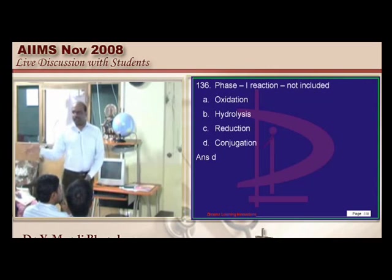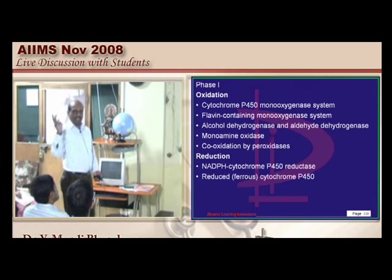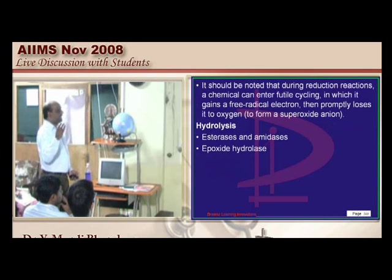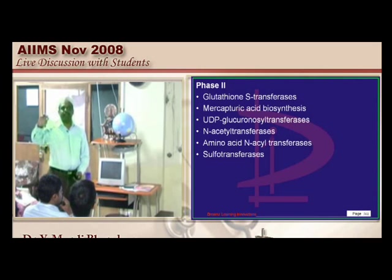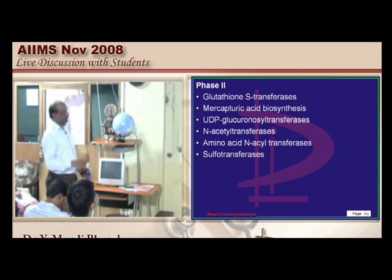Phase 1 and phase 2 drug reactions — phase 1 includes oxidation, reduction, and hydrolysis. Phase 2 includes glutathione transferase, acetyl transferase, conjugation, sulfotransferase, and mercapturic acid biosynthesis.